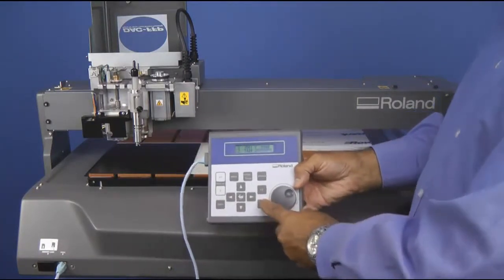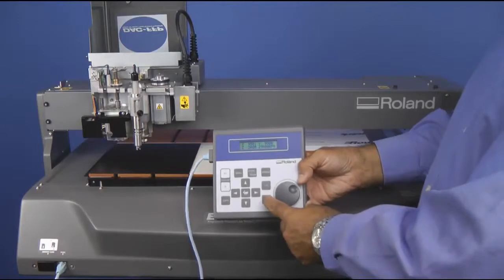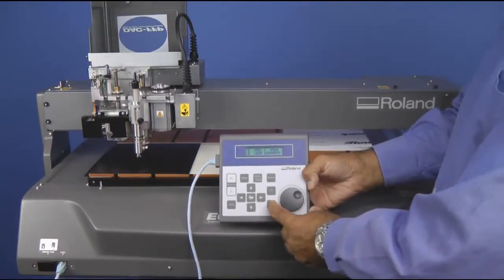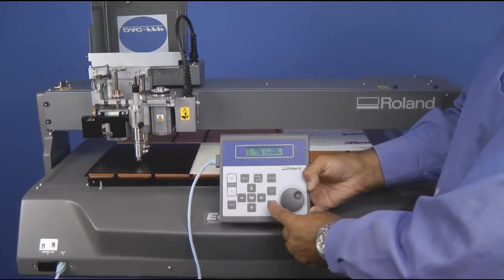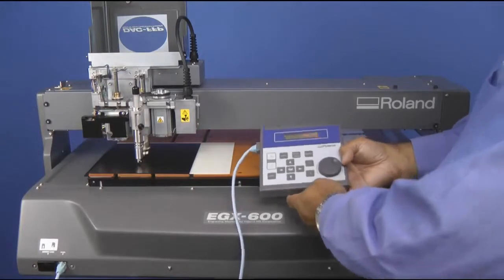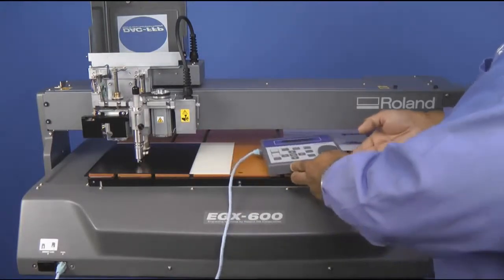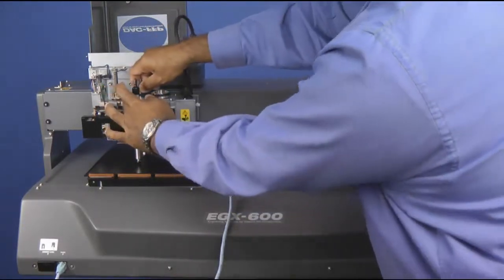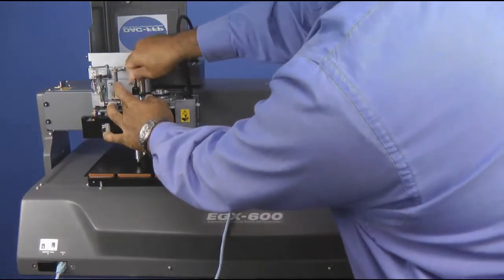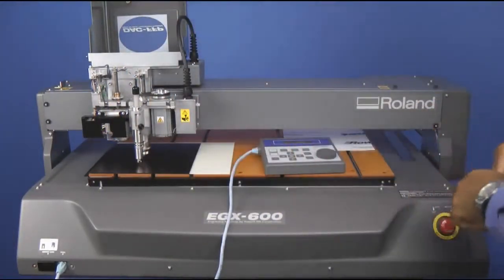To do so, we'll go ahead and use the Z minus key to bring the pen down to the surface of the material.